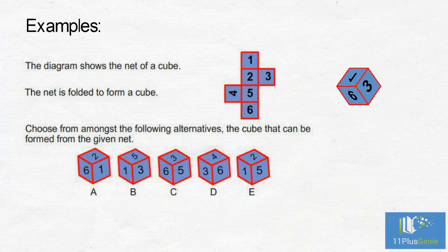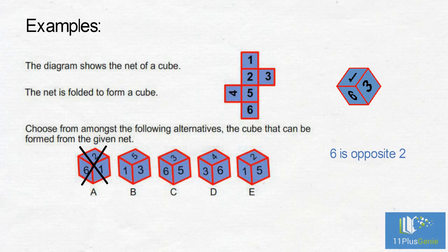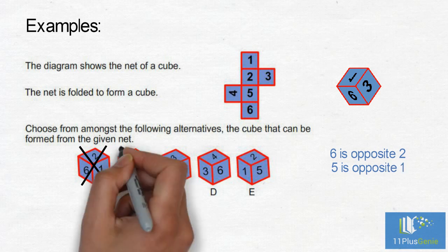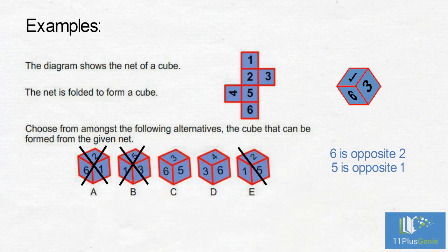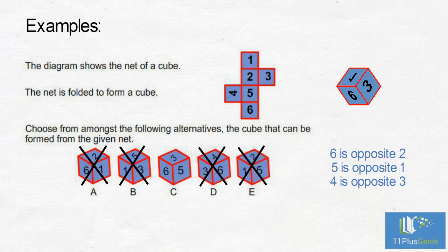We can see that 6 is opposite 2. We can eliminate A because 6 and 2 cannot be next to each other. 5 is opposite 1, so we can eliminate B and E. 4 is opposite 3, so we can eliminate D. The correct answer is C.